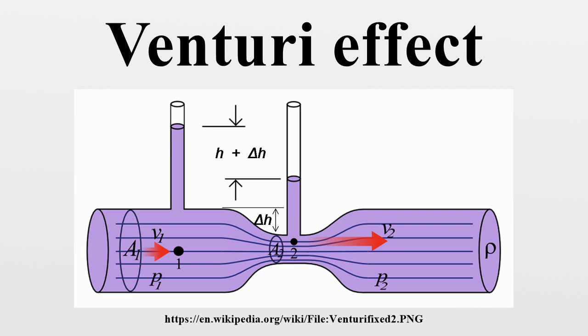A simple way to demonstrate the Venturi effect is to squeeze and release a flexible hose in which fluid is flowing. The partial vacuum produced in the constriction is sufficient to keep the hose collapsed.